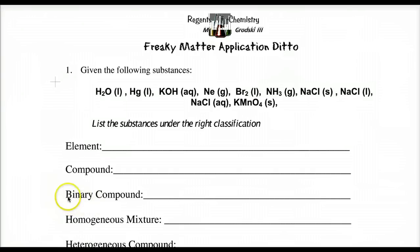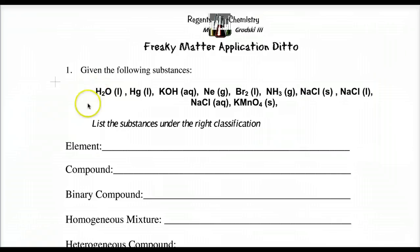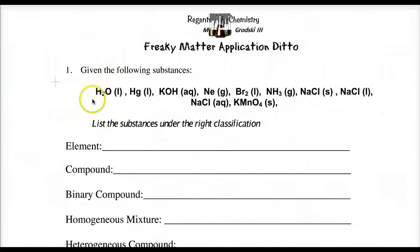A new vocab word: binary — we'll get to that shortly. What we want to do is decipher who are my compounds, elements, and mixtures. Let's start with elements. The first thing I'm going to do is look for elemental symbols from my periodic table. This is the classic mercury, so this is an element.